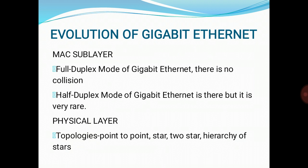The evolution of Gigabit Ethernet covers the MAC sublayer and physical sublayer. The main consideration was to keep the MAC sublayer untouched; however, to achieve a data rate of 1 Gbps, that was no longer possible. Gigabit Ethernet has two approaches for medium access: half duplex and full duplex. Almost all implementations follow the full duplex approach, in which there is no collision. In half duplex mode there is collision, but it is rarely used.